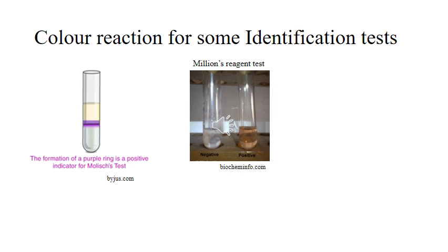These are some color reactions for the identification tests. The Molisch test on the left shows a purplish ring or violet color, confirming plant origin — absence of that ring indicates animal origin. For the Millon's reagent test, the negative result showing no red color indicates plant origin, while the positive test giving a slight reddish color tells you the fiber is of animal origin.